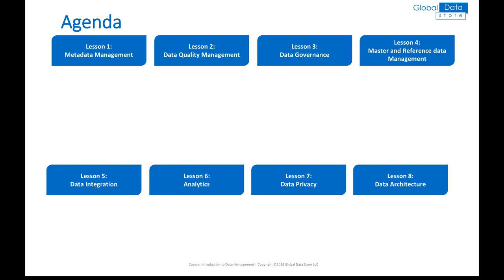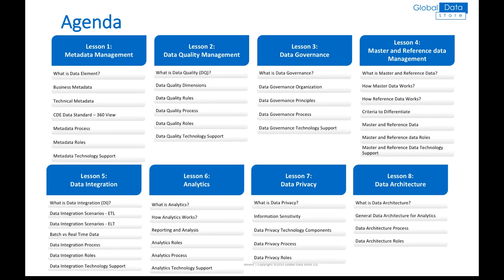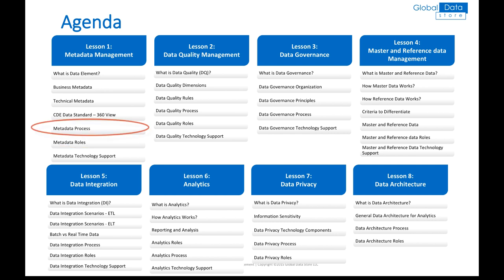The agenda contains eight lessons, and each covers one particular data management capability. A lesson usually starts by defining and explaining the capability and its key concepts — for instance, critical data element and metadata management. After you get an understanding of the capability and its key concepts, we put our focus on capability aspects such as people, in terms of roles and responsibilities associated with the capability, then process, in terms of capability activities, and finally technology, to define functionalities for the tools required to support the data management capability process.